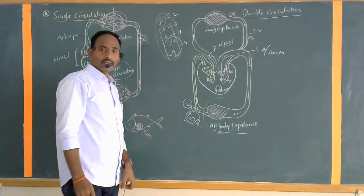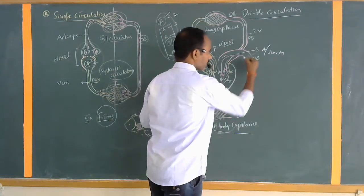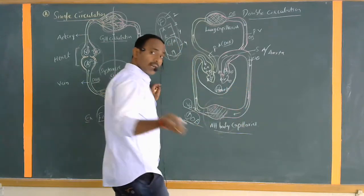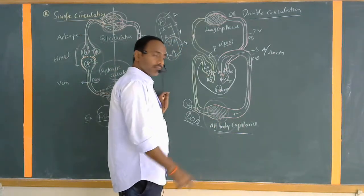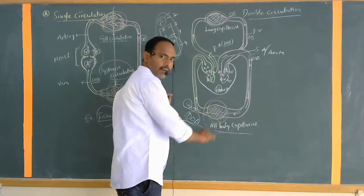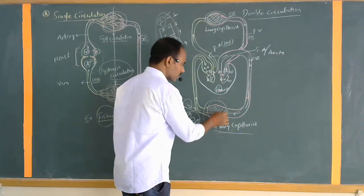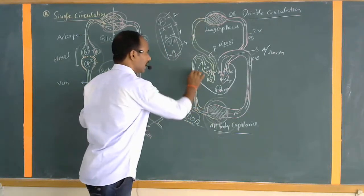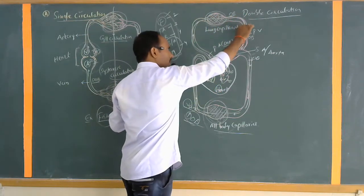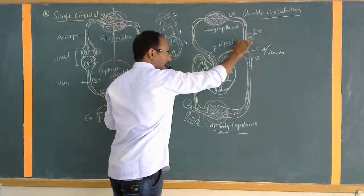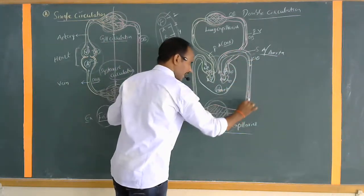The left auricle receives oxygenated blood, which passes to the left ventricle. The left ventricle sends the oxygenated blood to the blood vessel called the systemic aorta, or aorta — the largest blood vessel in the body. This oxygenated blood passes to the body parts through arteries dividing into smaller arteries and finally into capillaries.